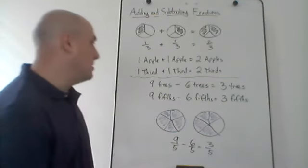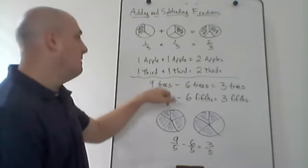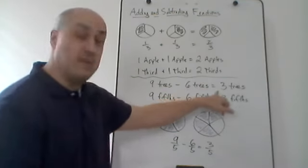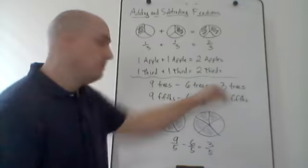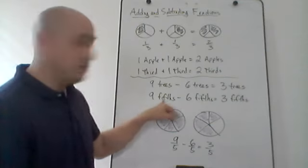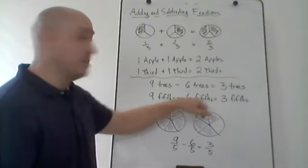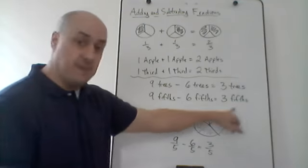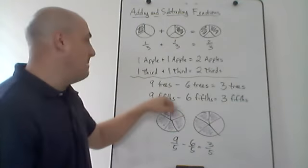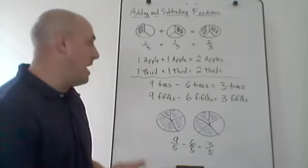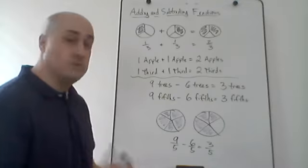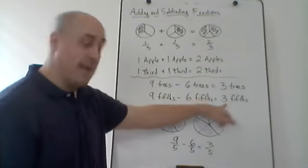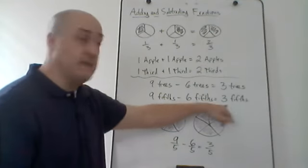A similar thing happens with subtraction. If I had nine trees minus six trees, that's going to give me three trees. What if I had nine-fifths minus six-fifths? Well, that's going to give me three-fifths. It doesn't matter what word I'm counting — whether I'm counting trees or apples or thirds or fifths. If I have nine of them minus six of them, I end up with three of them.